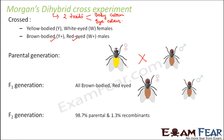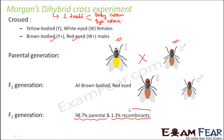In the F2 generation, it was observed that 98.7% of the offspring were exactly like the parents — either yellow-bodied white-eyed or brown-bodied red-eyed. Only 1.3% were recombinants, meaning new combinations different from the parents. This was a notable observation that deviated from expectations based on Mendel's rules.